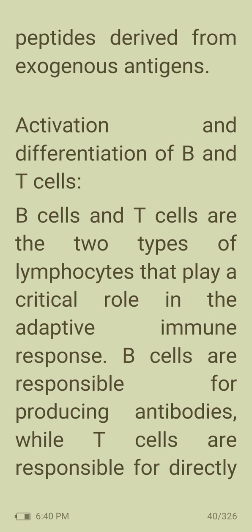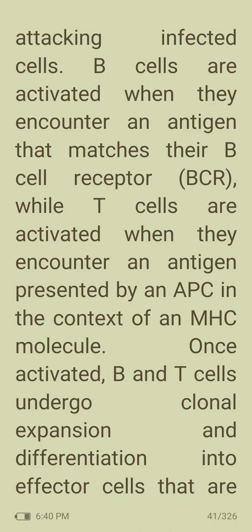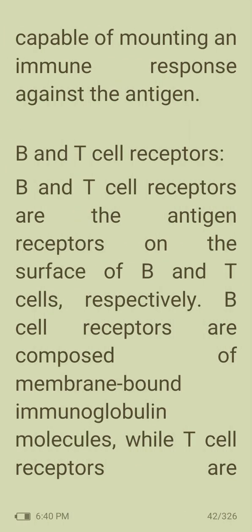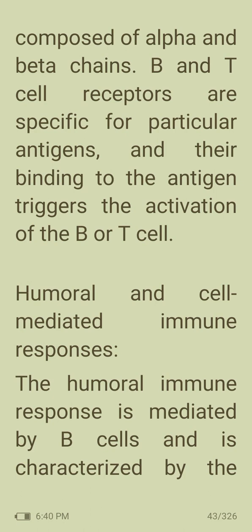B cells and T cells are lymphocytes that play critical roles in the adaptive immune response. B cells produce antibodies, while T cells directly attack infected cells. B cells are activated when they encounter an antigen matching their B cell receptor; T cells are activated when they encounter an antigen presented on an APC in the context of an MHC molecule. Once activated, B and T cells undergo clonal expansion and differentiation into effector cells. B cell receptors are membrane-bound immunoglobulins; T cell receptors are composed of alpha and beta chains.